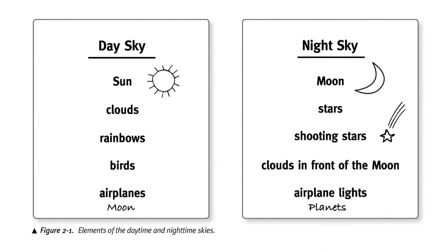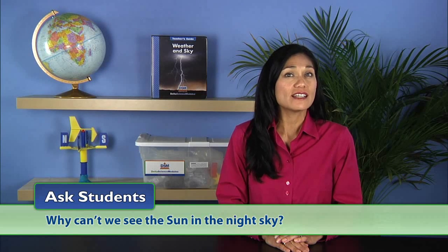Next, display the day sky and night sky charts students made in Activity 2. Ask students, why can't we see the sun in the night sky?